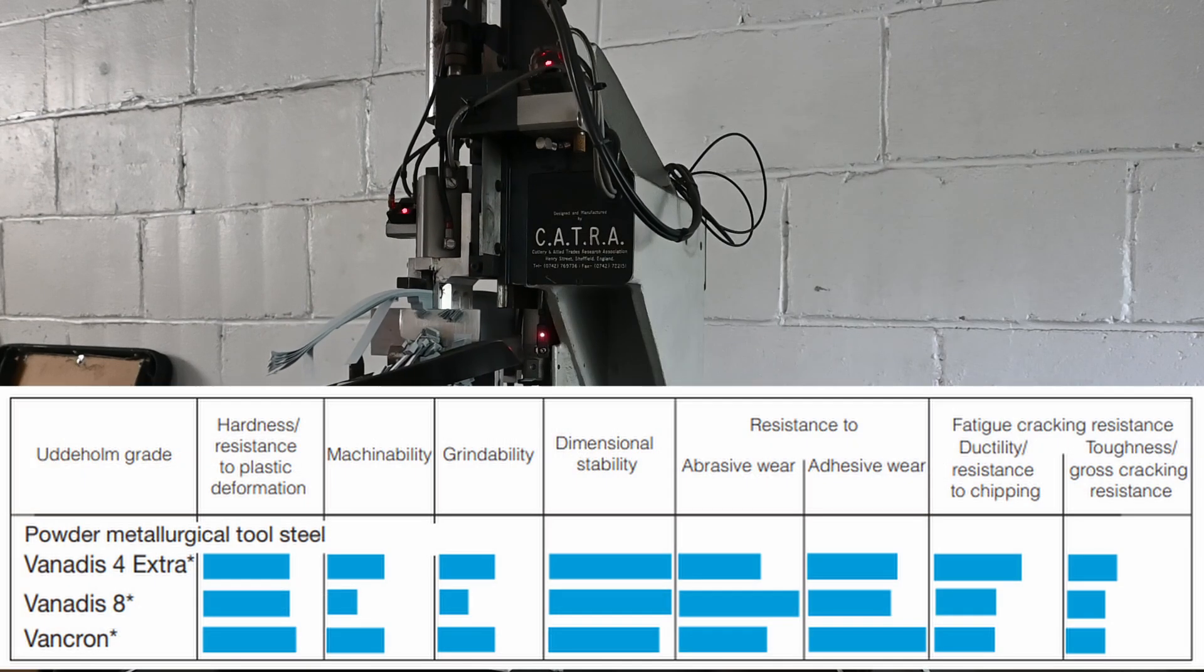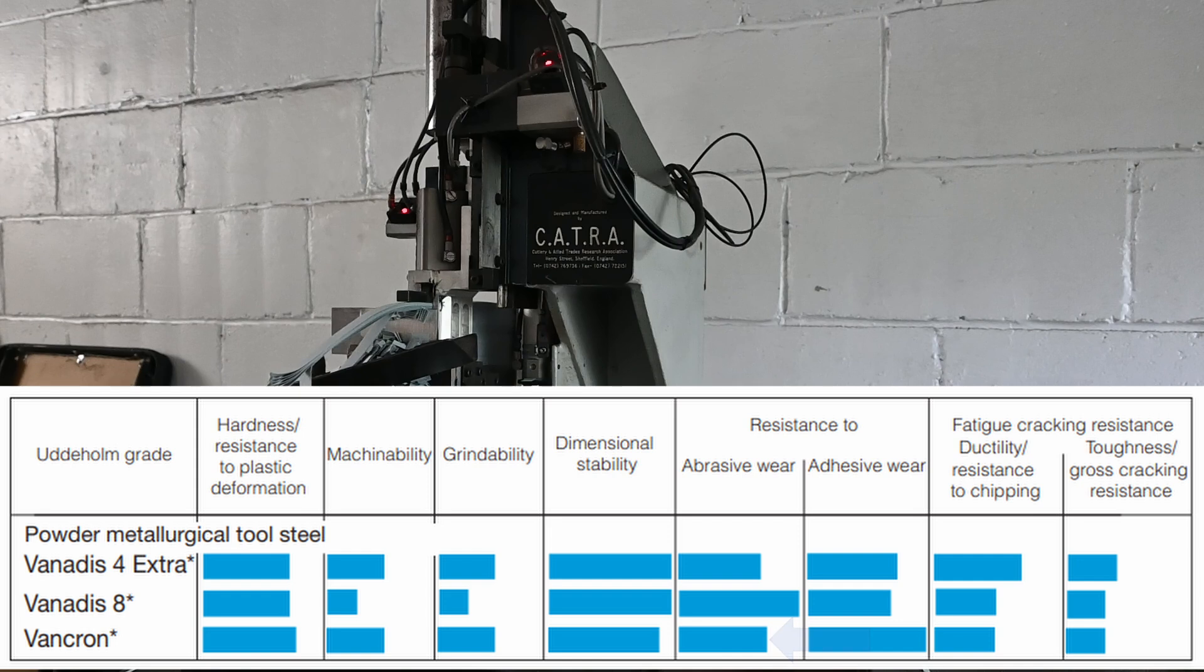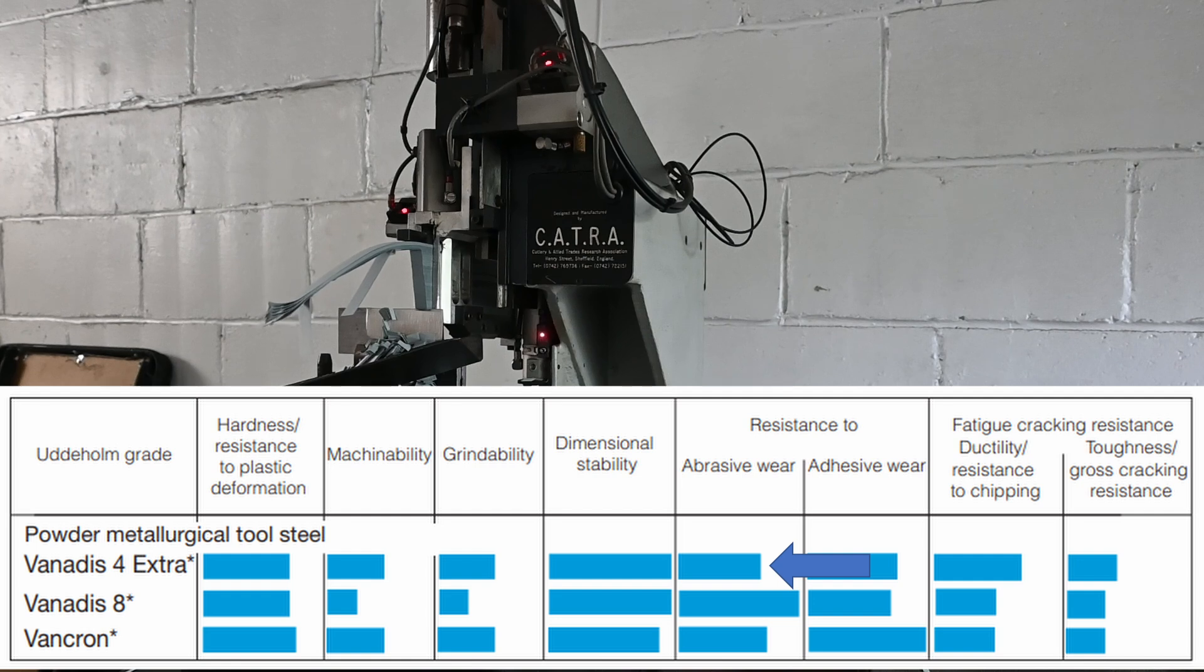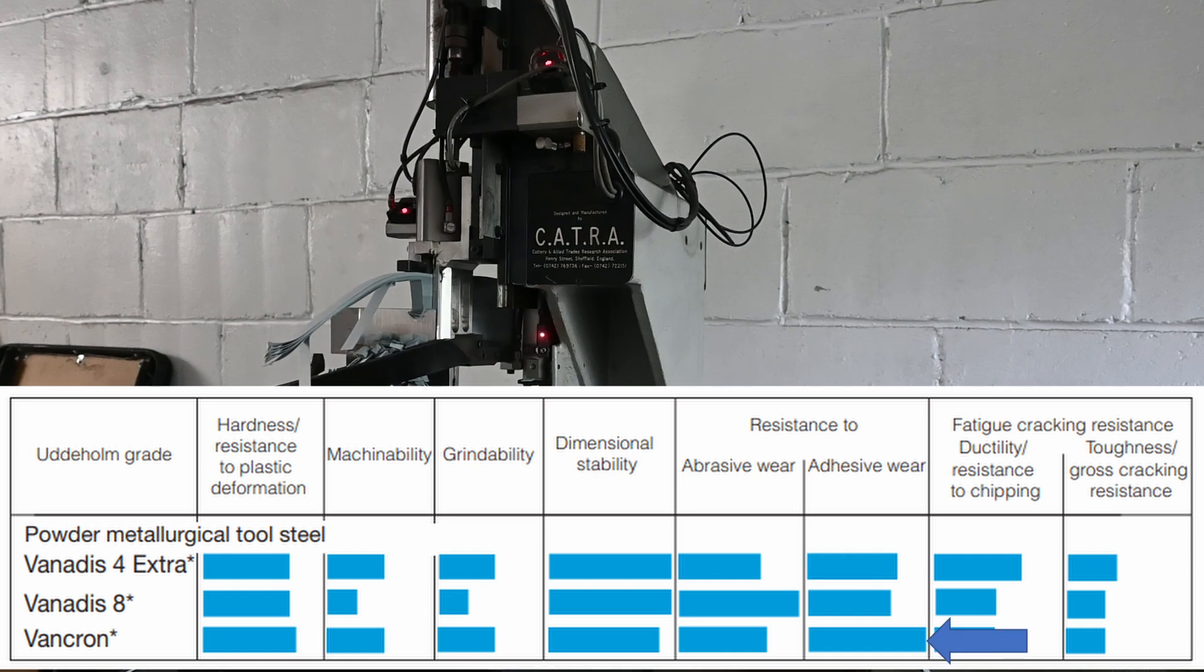Well, in Uddeholm's own datasheet, it shows VANCRON as having only average abrasive wear resistance. Uddeholm ranks it as only slightly better than Vanadis 4 Extra and significantly below Vanadis 8. Instead, what Uddeholm rates very highly for VANCRON is its adhesive wear resistance.